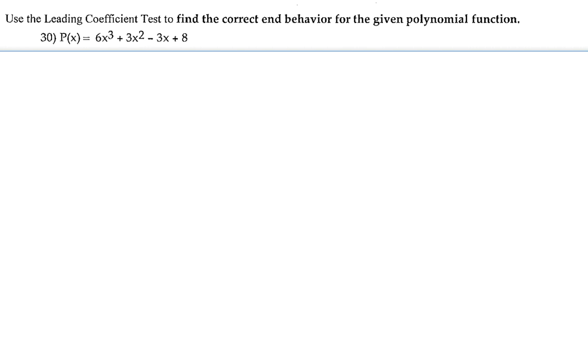For number 30, we're going to use the leading coefficient test to find the correct end behavior for the given polynomial function. Here, the given polynomial function is P(x) = 6x³ + 3x² - 3x + 8. So we have four terms inside of this polynomial function.